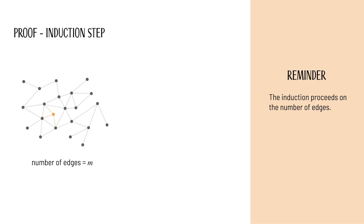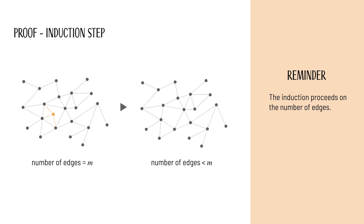Let's recall. The induction proceeds on the number of edges. For the inductive step, we consider a graph with a certain number of edges and another graph with fewer edges. The graph with fewer edges is obtained from the one with more edges. We aim to show that if Menger's theorem holds for the graph with fewer edges, then it also holds for the graph with more edges. To apply this reasoning, we still need a meaningful way to reduce the number of edges in a graph. For this, we use edge contraction.